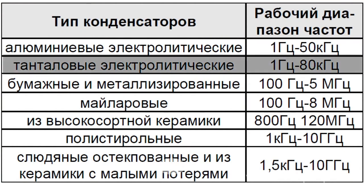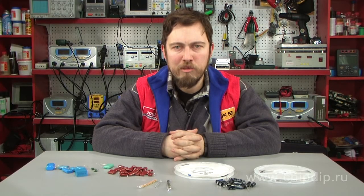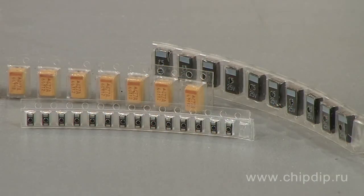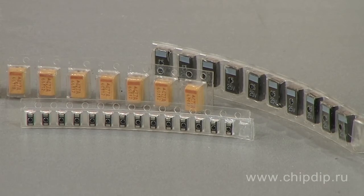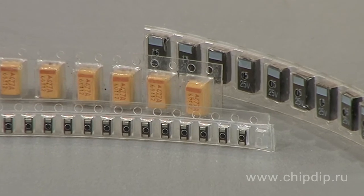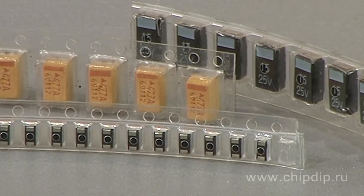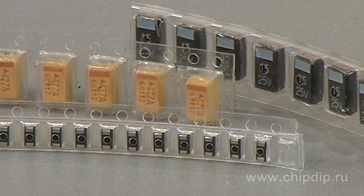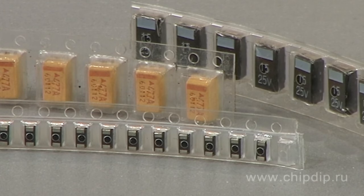Parameters offered by tantalum dry electrolytic capacitors are similar to those of aluminum electrolytic capacitors. They have smaller series resistance, while their capacity per unit of volume is greater than that of aluminum electrolytic capacitors. Some solid tantalum capacitors have quite low inductance and can work at higher frequencies than aluminum electrolytic ones. On the whole, they are more time-stable and can sustain temperature changes and impulse loads better than aluminum capacitors.